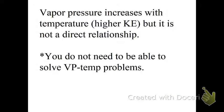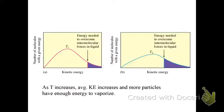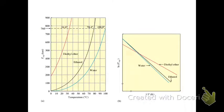So here we have vapor pressure increasing with temperature because heat them up, speed them up, and that means higher kinetic energy, but it is not a direct relationship. You do not need to be able to solve vapor pressure temperature problems for the AP exam. As temperature increases, the average kinetic energy increases, and more particles have enough energy to vaporize. Here we have the temperature, inverse temperature, on the right side.